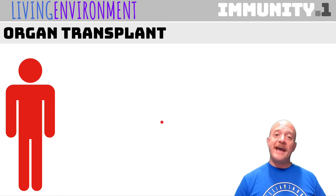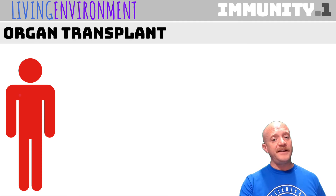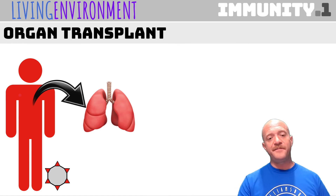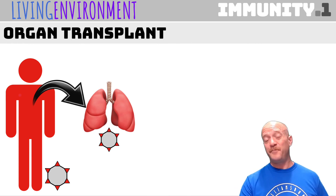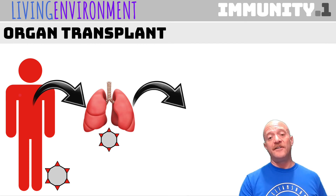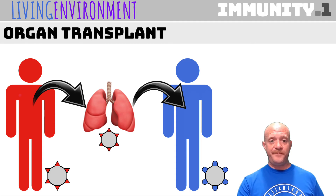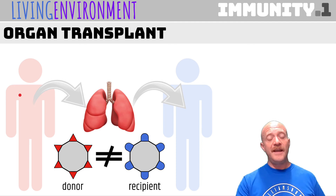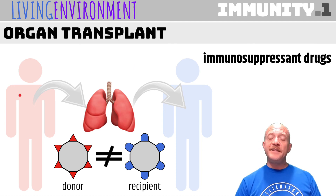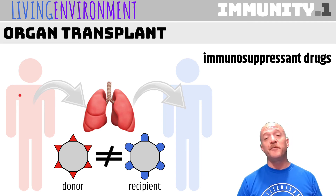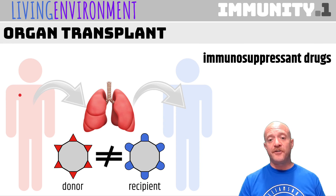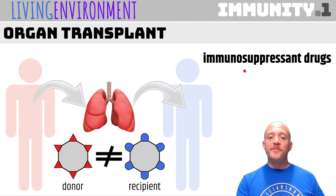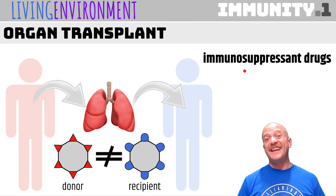One thing that could happen is if you get an organ transplant. Let's say somebody dies in a car accident and they donate their lungs — their lungs are going to have particular antigens present, and the recipient is going to have a different antigen. These antigens of the donor and the recipient aren't equal, and that's going to be a problem. In the cases of organ transplant, the recipient will have to take immunosuppressant drugs. 'Immuno' means the immune system and 'suppressant' means to hold it down — basically, they're trying to reduce the immune response to this invader.